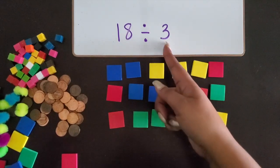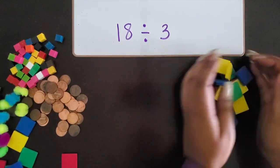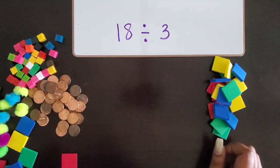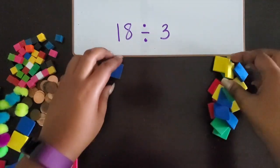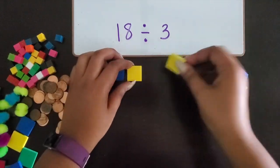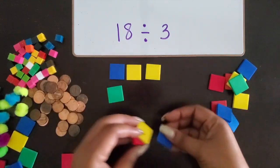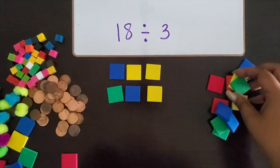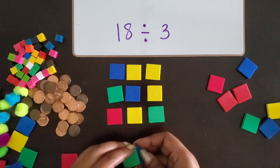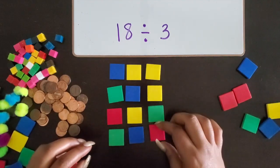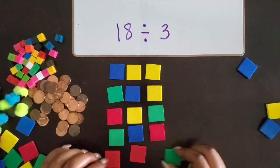Now let's look at it a different way — if we wanted to put three in each row and didn't know the number of rows. We have our 18 square units again. We're going to put three square units in each row: count out three — that's one row; another three — two rows; another three — three rows; another three — four rows; another three — five rows.